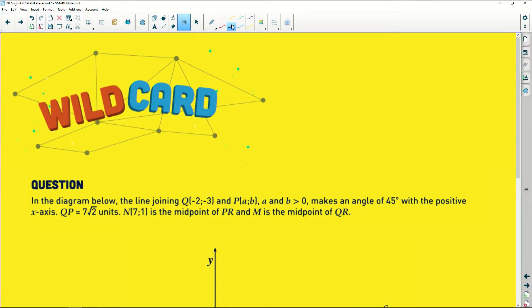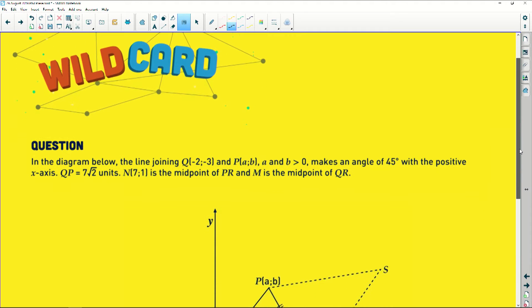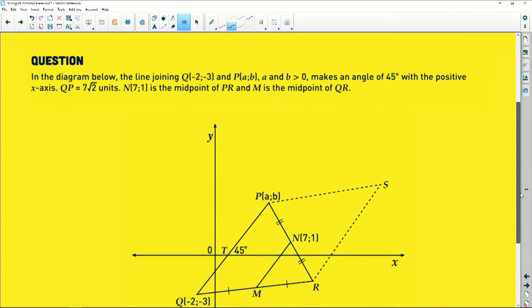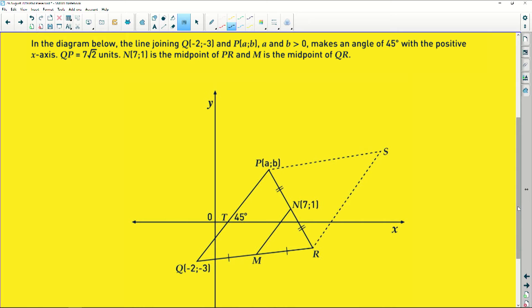It says that in the diagram below, the line joining Q, which is a point at negative 2, negative 3, and P at a and b, where a and b are positive, which makes sense because a and b are positive x values, positive y values, makes an angle of 45 degrees with the positive x-axis. So that's basically just this line here. If you take the angle between it and the x-axis, you're going to get 45 degrees.